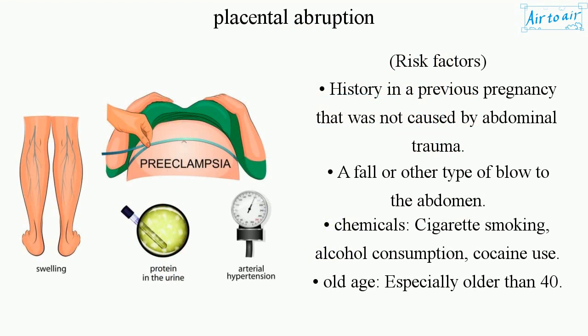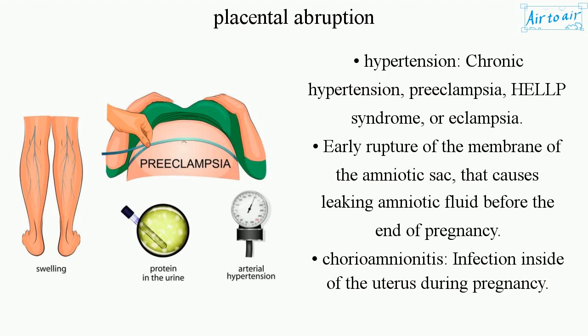Risk factors include history of placental abruption in a previous pregnancy not caused by abdominal trauma, a fall or other blow to the abdomen, cigarette smoking, alcohol consumption, cocaine use, old age especially older than 40, hypertension, chronic hypertension, preeclampsia, HELLP syndrome or eclampsia, early rupture of the amniotic sac membrane causing leaking amniotic fluid before the end of pregnancy, and chorioamnionitis — an infection inside the uterus during pregnancy.